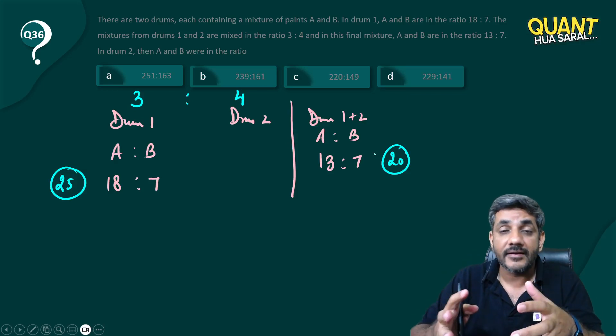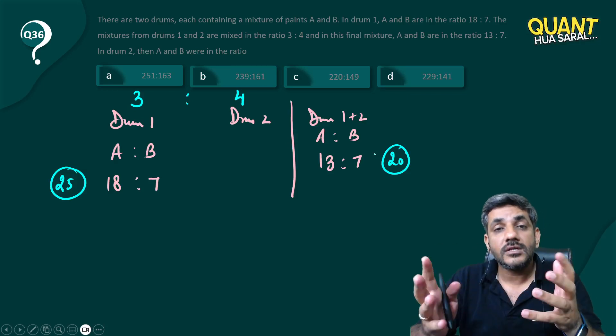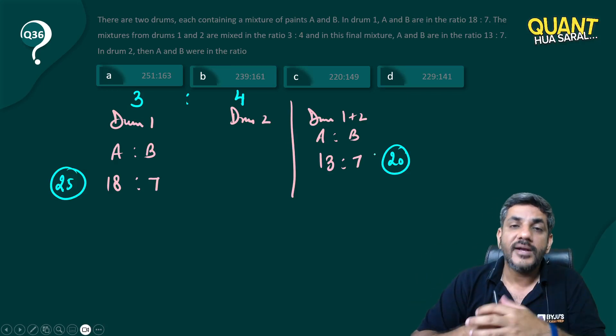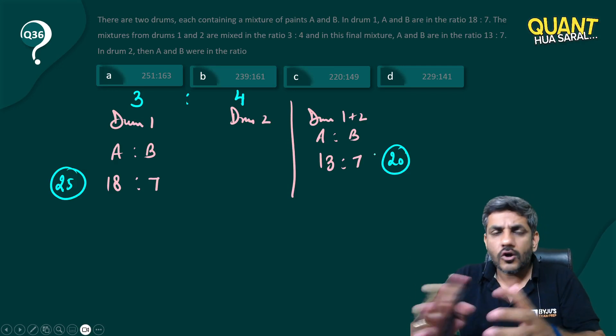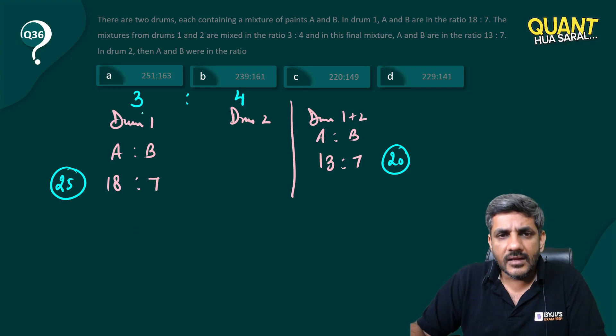So it's better to state the total quantities as a multiple of 25 and 20. It will make your job easy. A common multiple of 25 and 20 is 100. If I am mixing them in a ratio of 3 and 4, let us say I take 300 liters of drum 1, 400 liters of drum 2.